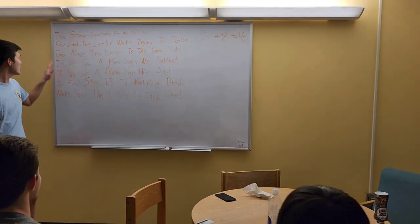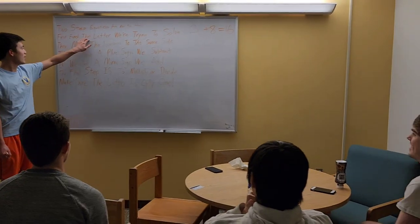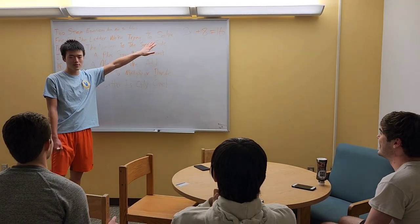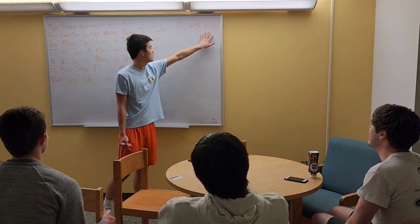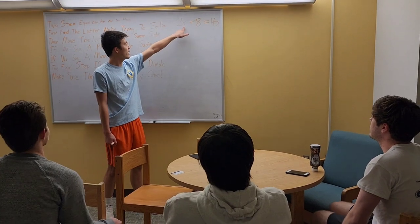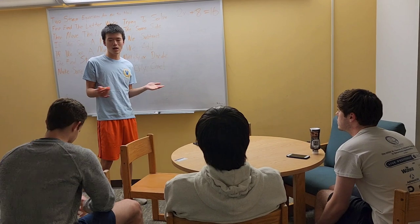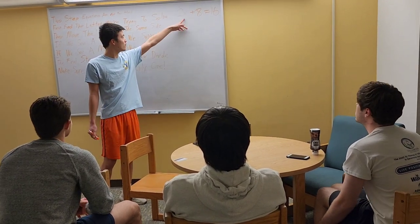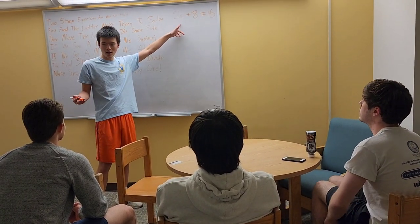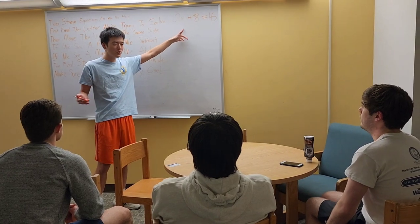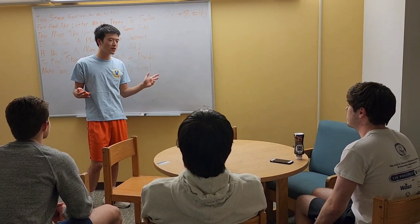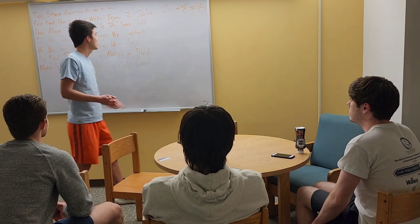So if we go back to the chant, first find the letter we're trying to solve. So the letter here is x. And what x is, is x is a variable. What that means is that x represents an unknown number. It could be a negative number, it could be a positive number, it could be zero, it could even be a fraction. Any number. We're just trying to figure out what that number is.